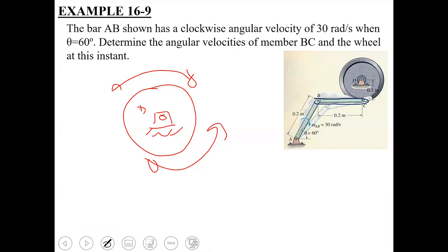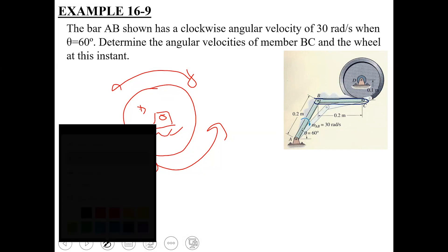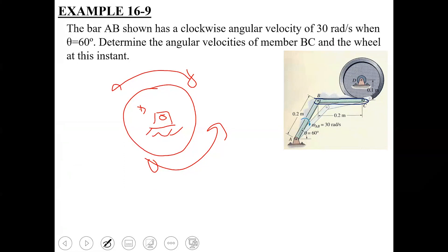Now moving to the third link, which is link BC. This is the link connecting both of those — link AB and wheel D. At this instant its position is shown in blue. At the next instant, when link AB rotates in this direction, this link comes to the position shown in yellow. So for this analysis, the general plane motion relative velocity equation will need to be applied.